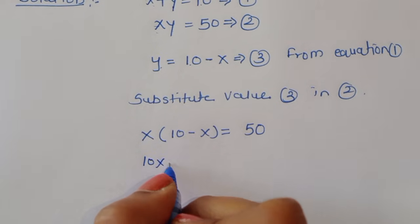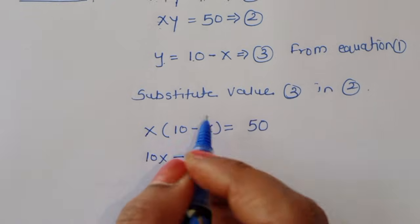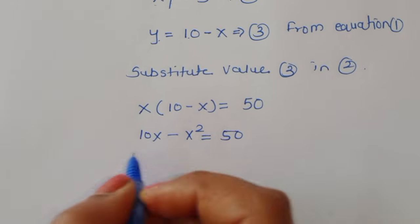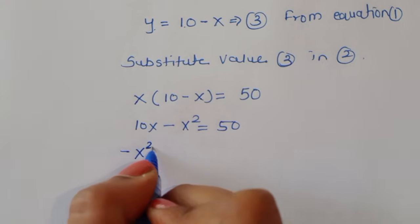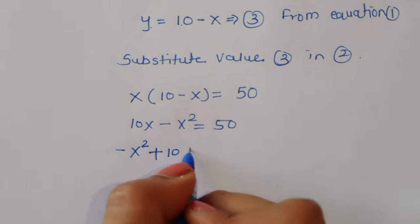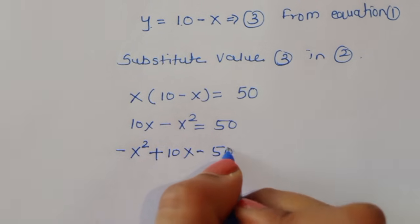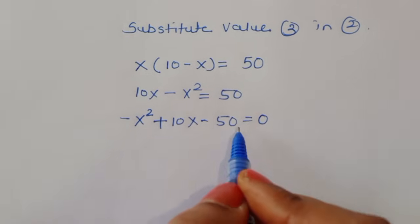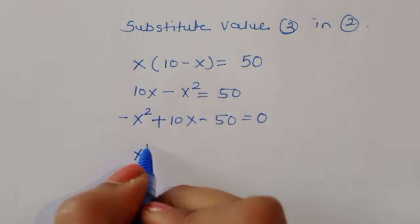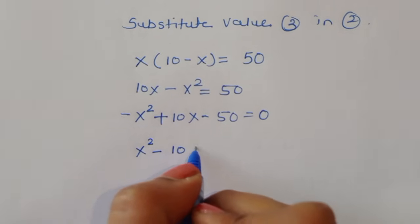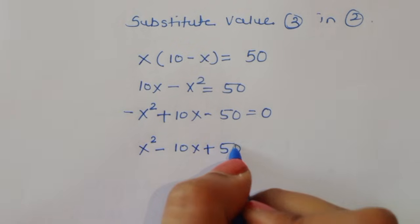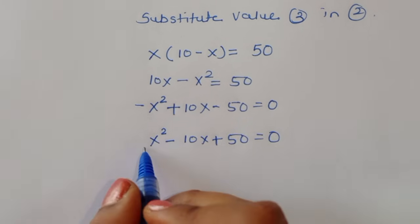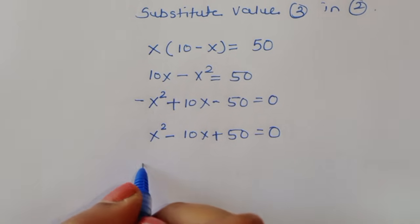Expanding, we get 10x minus x squared is equal to 50. Rearranging, we write minus x squared plus 10x minus 50 is equal to 0. Multiplying through by minus 1, we get x squared minus 10x plus 50 is equal to 0.